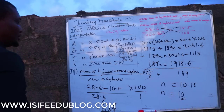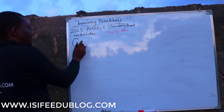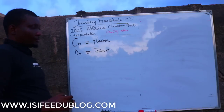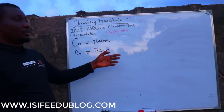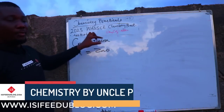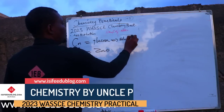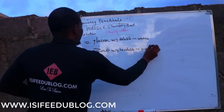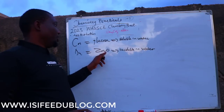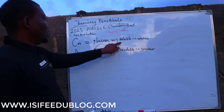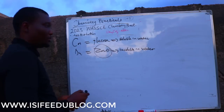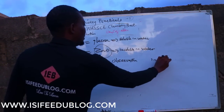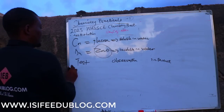Number two — thought analysis. We have two questions: CN being glucose and DN being zinc oxide. They give us a list of reagents, one of which is Fehling's solution A and B. That means we're going to test for this. CN (glucose) is soluble in water, while DN (zinc oxide) is insoluble in water but can dissolve in acid and base, being amphoteric. Most questions like this are done in tabular form with headings: Test, Observation, and Inference.